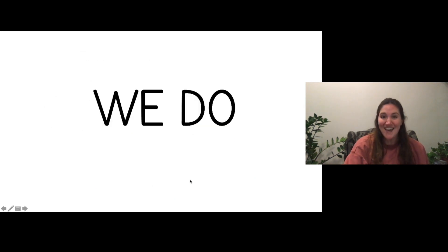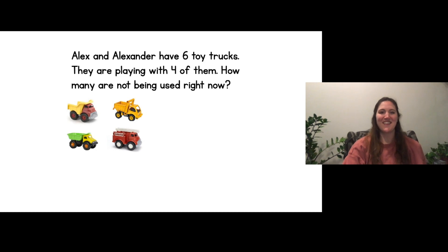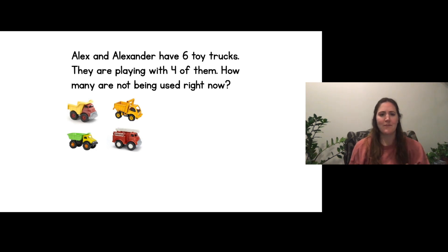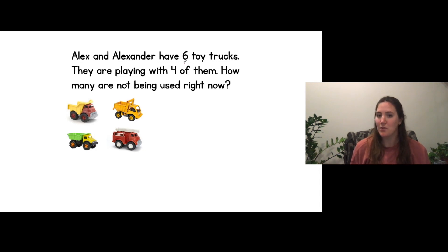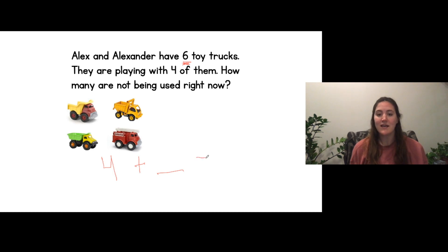All right let's solve some together. You can get a piece of paper so you can write those number sentences with me. This says Alex and Alexander have six toy trucks. They are playing with four of them. How many are not being used right now? So we know they're not using all of the trucks right now because they're supposed to have six toy trucks, but right now they only have four. So if they have four that they're using right now, four plus how many are they not using equals six altogether. So there's four trucks that they're playing with right now.